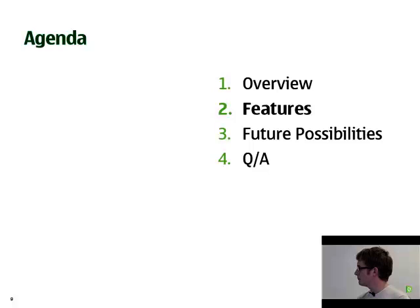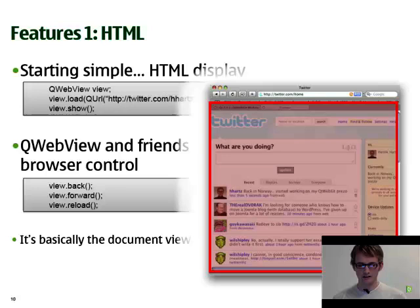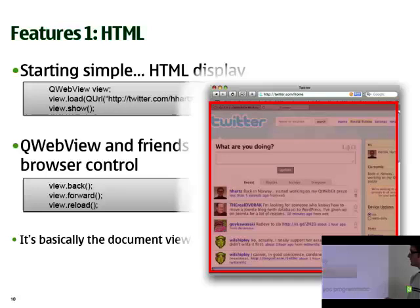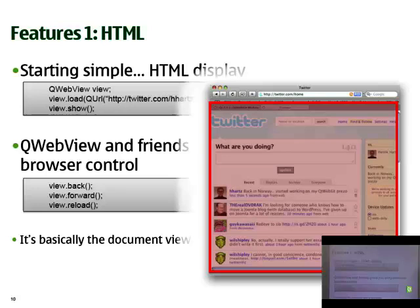Let's start looking at the specific features of WebKit, starting with the very basics. WebKit being a web browser engine gives you the possibility of displaying HTML. A very simple example is to create a simple web view, tell it to show a specific URL, and then show the window. You also have some basic functionality for browser-like operations such as back, forward, and reload. You can think of the web view as the document view of a web browser.